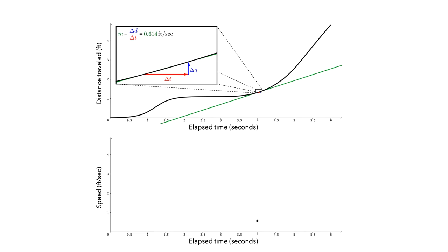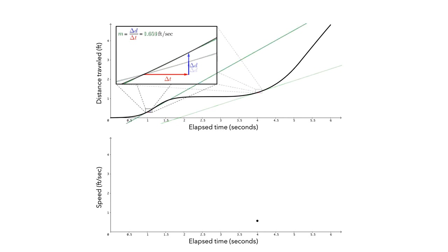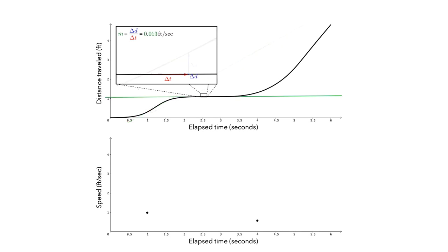Let's look at a couple of other points on our original graph to find their slopes. We'll start with looking at t equals 1 second. We can see that the value of the derivative at t equals 1 second is 1.059 feet per second, and we can represent this as a point on the graph. Next, let's move to t equals 2.5 seconds. We can see that the value of the derivative at t equals 2.5 seconds is nearly 0, roughly 0.013 feet per second, and we can represent this on the graph.